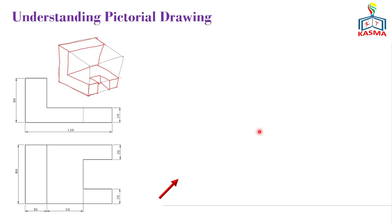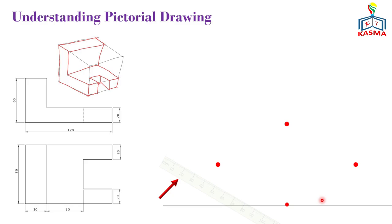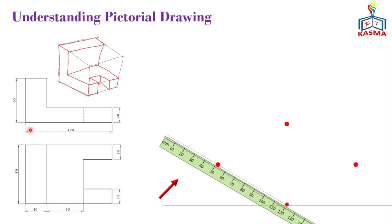We are trying to construct this drawing on the isometric drawing. To do that, let's indicate the lower point of the box — we'll start constructing our box starting from this point. Once you mark that point, arrange your protractor and mark three directions: 30 degrees from the right, 30 degrees from the left, and 90 degrees vertically in the middle. This gives us the isometric axes.